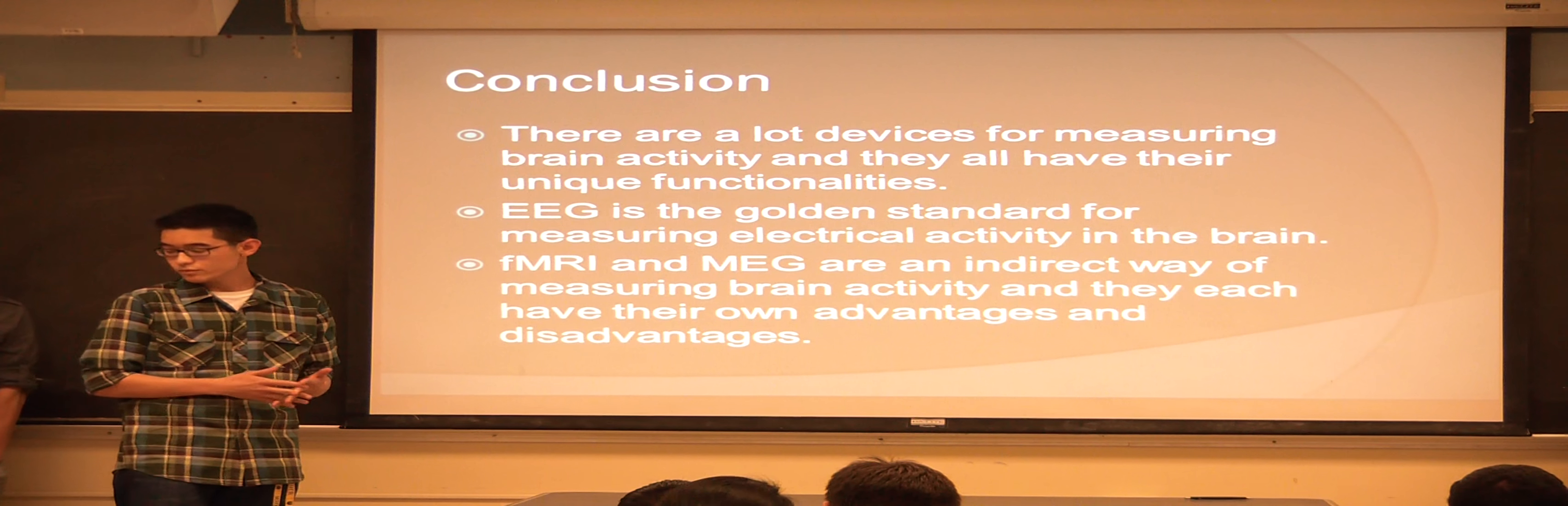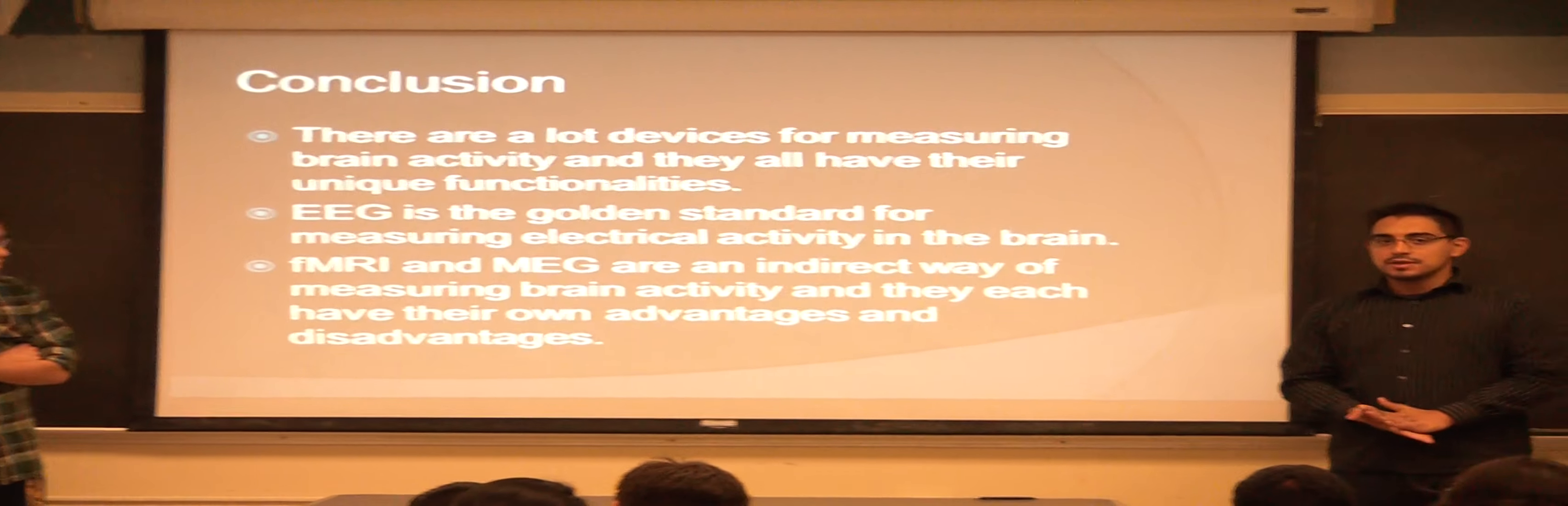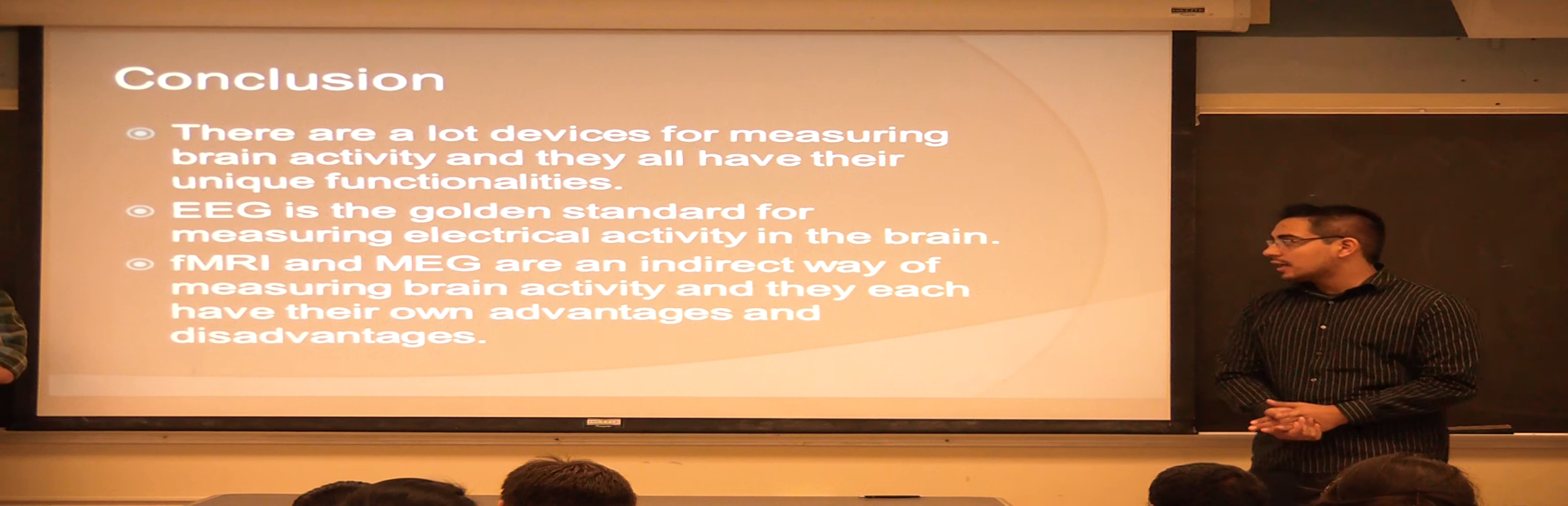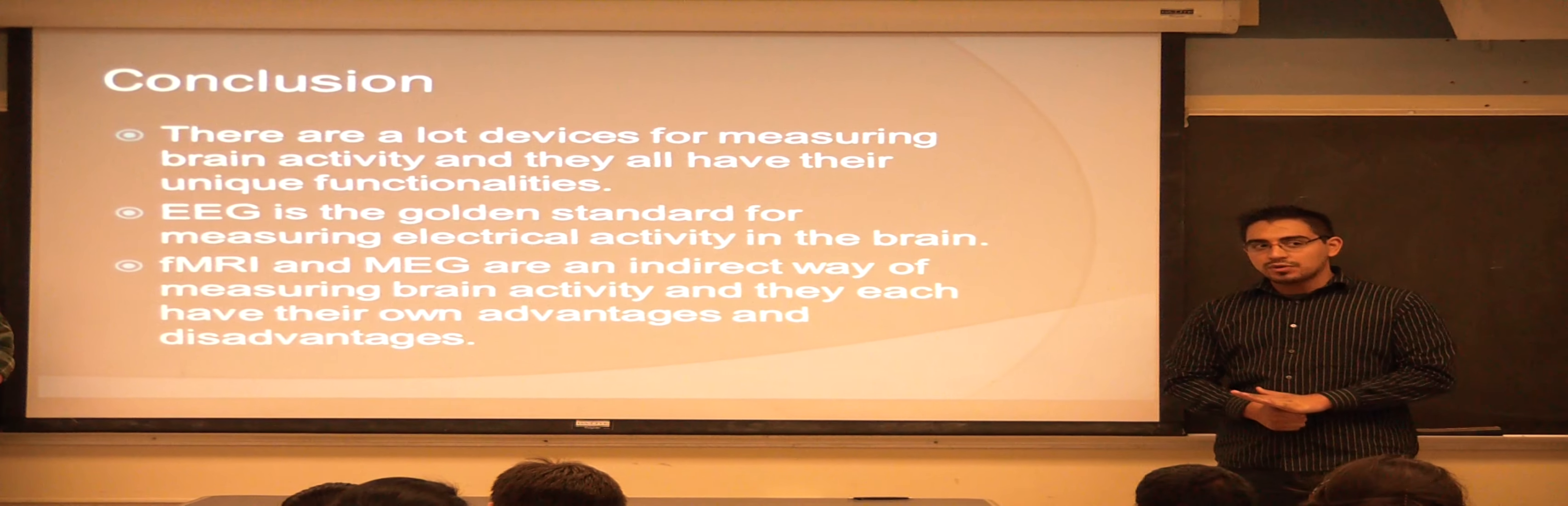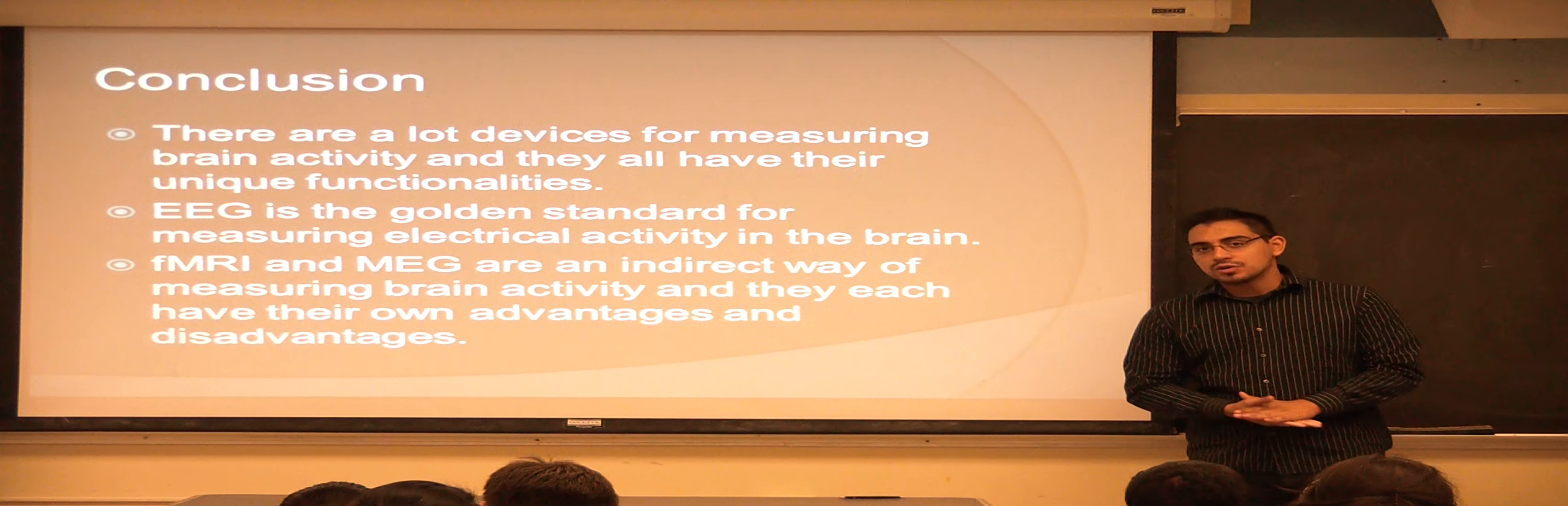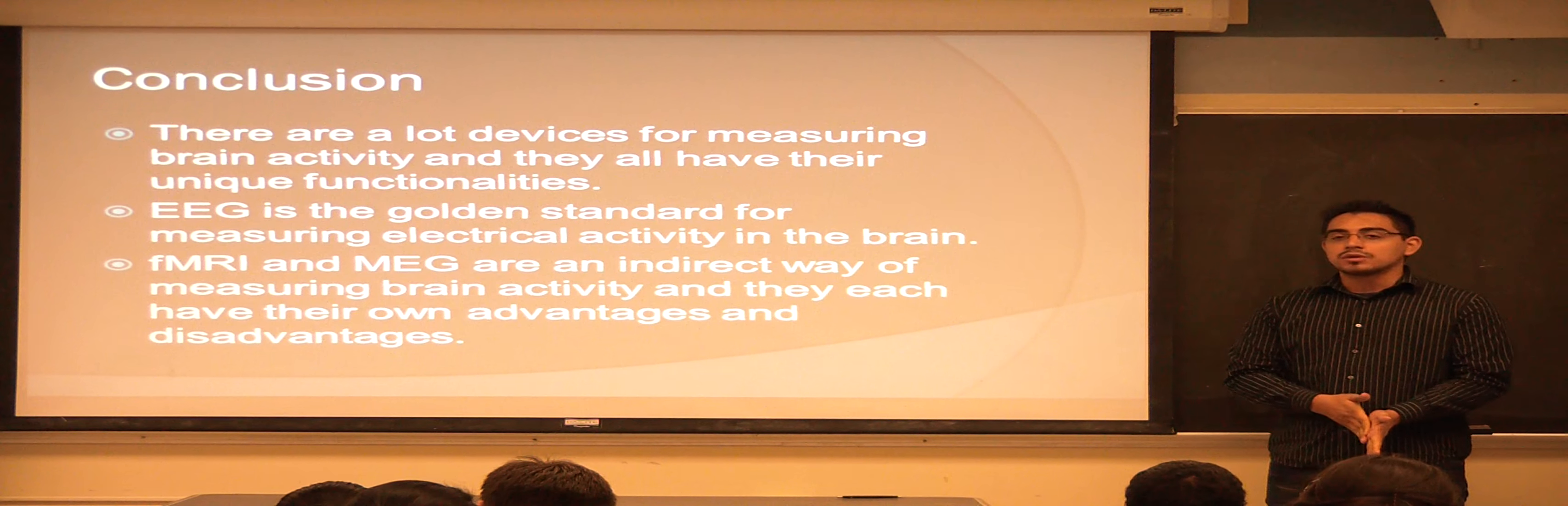So, to wrap up, there's a lot of medical devices you can use to measure electrical activities in the brain. EEG is the gold standard for measuring these electrical activities, and the fMRI and MEG both have their advantages and disadvantages. Just depending on what exactly you're looking for, you select them accordingly.